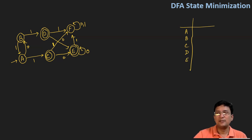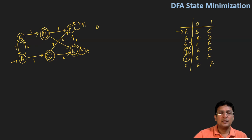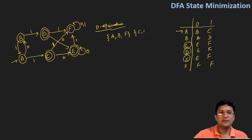The states C, D, and E are the final states — I'll encircle these states C, D, E. The transitions are B→C, A→D, E→F, E→F, E→F, and F→F. Now for the zero equivalence, we have to segregate the non-final states and the final states. The non-final states are A, B, and F, and the final states are C, D, and E.